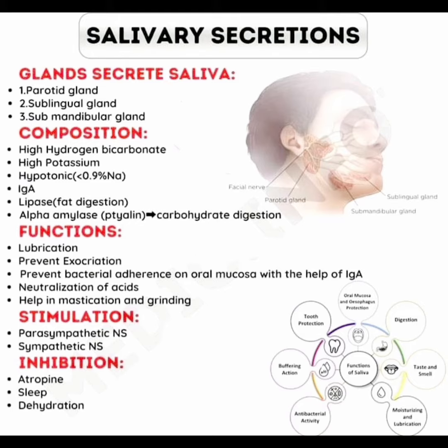The composition of saliva also includes immunoglobulin A, lipase for fat digestion, and alpha-amylase (ptyalin) that is used in carbohydrate digestion. So this is the composition of saliva. Functions of saliva include lubrication and prevention of excretion.